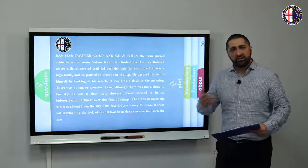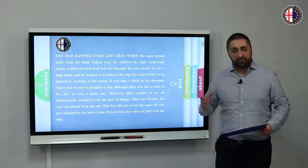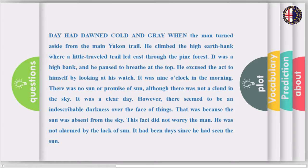Sometimes when we read, we try to predict what will happen next in the story. Let me read out the beginning of the first part of the story. 'Day had dawned, cold and gray, when the man turned aside from the main Yukon trail. He climbed the high earth bank where a little trail led east through the pine forest. It was a high bank, and he paused to breathe at the top. He excused the act to himself by looking at his watch. It was nine o'clock in the morning. There was no sun or promise of sun, although there was not a cloud in the sky. However, there seemed to be an indescribable darkness over the face of things. That was because the sun was absent from the sky. This fact didn't worry the man.'